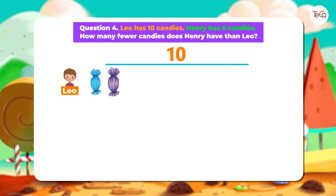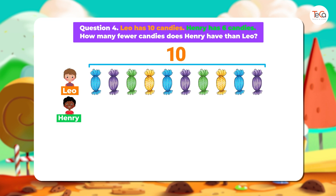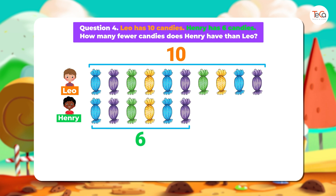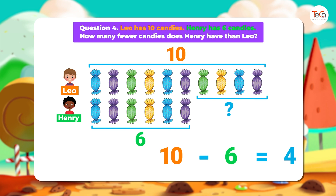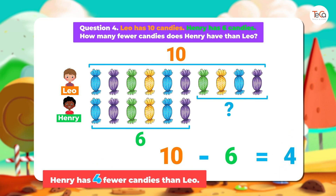Leo has 10 candies. Henry has 6 candies. So Henry has fewer candies than Leo. This is the number of fewer candies Henry has than Leo. We subtract 6 from 10 to find the number of fewer candies Henry has than Leo. Here, 10 minus 6 equals 4. We answer: Henry has 4 fewer candies than Leo.